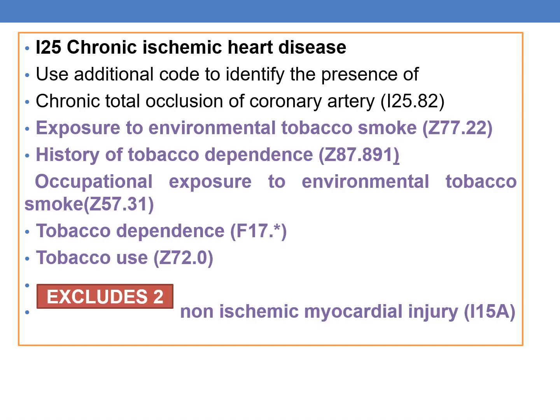Atherosclerotic heart disease comes under the I25 series. I25 deals with chronic ischemic heart disease. When coding subcategory I25, you need to use additional codes to identify the presence of chronic total occlusion of coronary artery (I25.82), exposure to environmental tobacco smoke (Z77.22), and history of tobacco dependence (Z87.891).